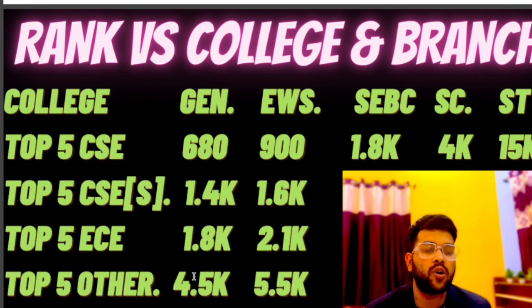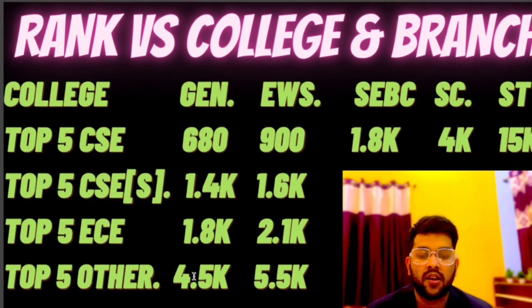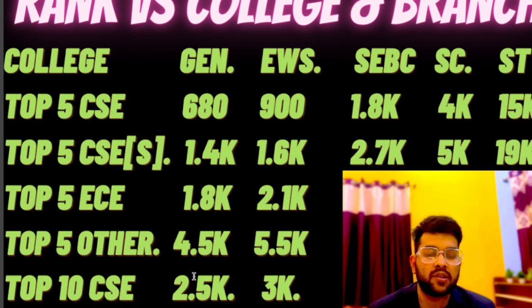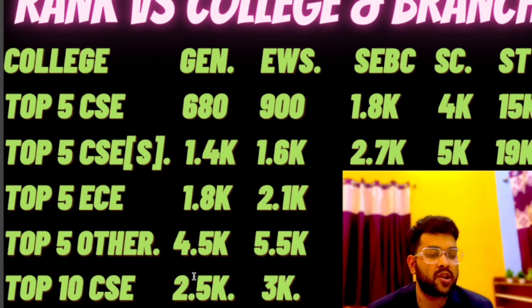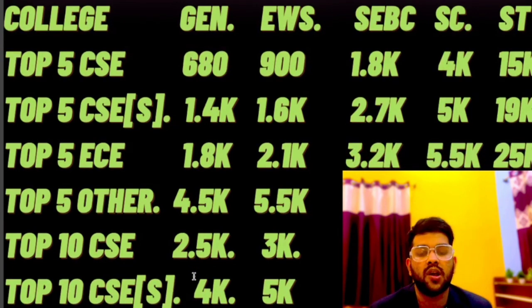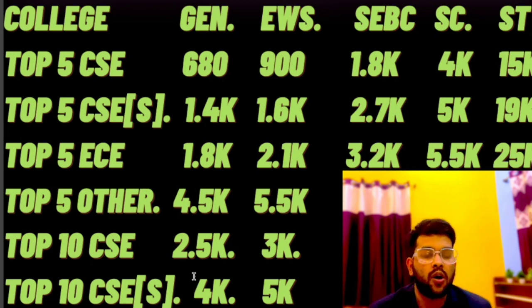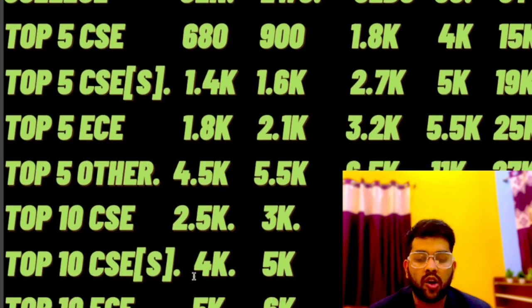For top 5 colleges with CSC specialization: ranks required are 1,400 (General), 1,600 (EWS), 2,700 (SEBC), 5,000 (SC), and 19,000 (ST). For top 5 EC branch: 1,800 (General), 2,100 (EWS), 3,200 (SEBC), 5,500 (SC), and 25,000 (ST). For top 5 other branches: 4,500, 5,500, 6,500, 11,000, and 27,000 respectively.